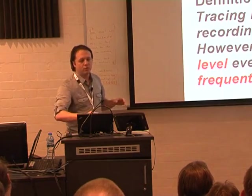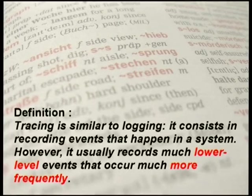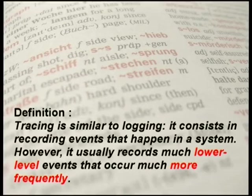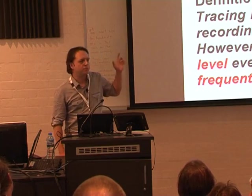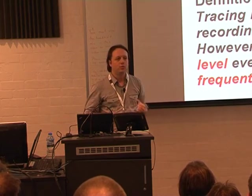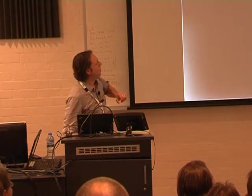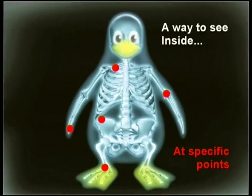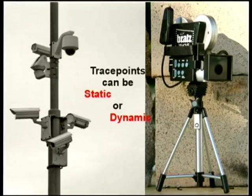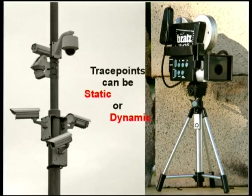Quickly reviewing what tracing is: most people see tracing as a kind of logging, but it operates at a lower level and at much higher frequency. We can see events every microsecond or every hundred nanoseconds, so you don't want to fill up text logs at that rate. Tracing lets you see activity at specific points inside a system. There are static and dynamic trace points in the kernel. Dynamic trace points are slower because you need to install them each time, while static trace points are really fast — a fast call that gets your data out quickly.